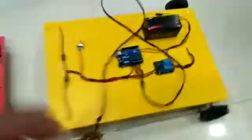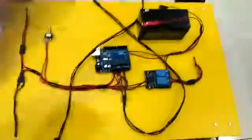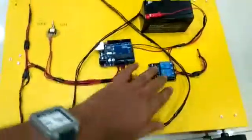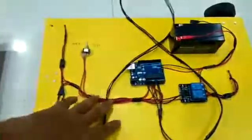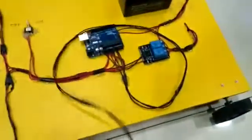For the second module, here is the same Arduino, relay, and battery for power supply. The line sensors are provided below this robot like this, and here is a remote provided using wires.